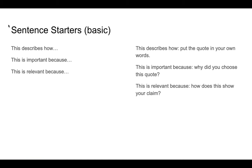For this project, we're going to start with the very basic sentence starters. The three I'm looking at are: 'This describes how...', 'This is important because...', and 'This is relevant because...' Here's how to use these three sentence starters: 'This describes how' — put the quote in your own words. You always give the direct quote first, then in your reasoning say 'this describes how' and put the quote in your own words — what is the quote saying, what is it describing? 'This is important because' — why did you choose this quote? In any short story, article, or book you have potentially hundreds of quotes you could use, so why are you using this one? 'This is relevant because' — how does the use of this quote show your claim?